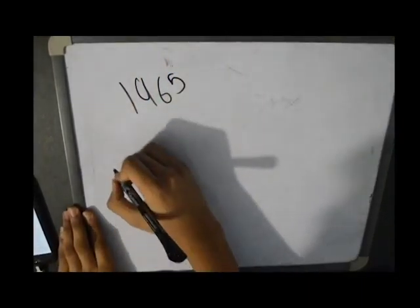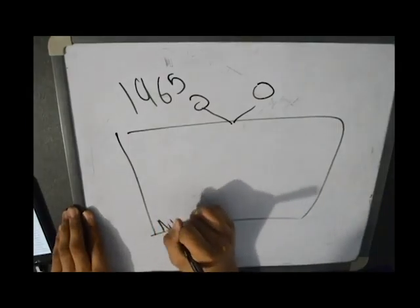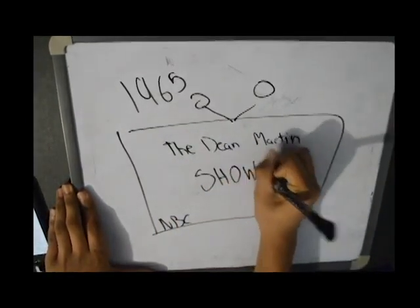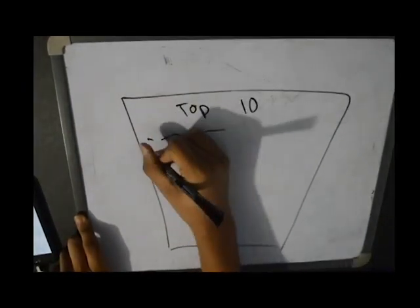In 1965, Martin launched a comedy series, The Dean Martin Show, on NBC. It ran for 264 episodes. The show was repeatedly on the top ten list.